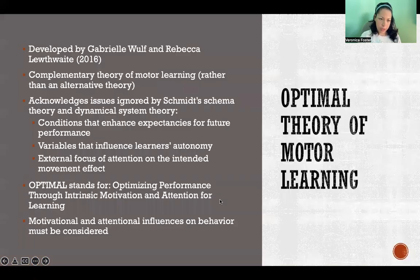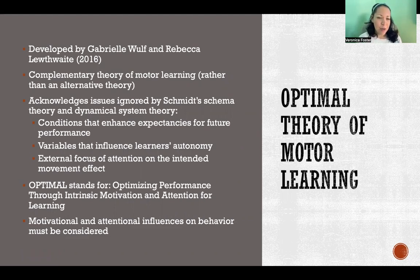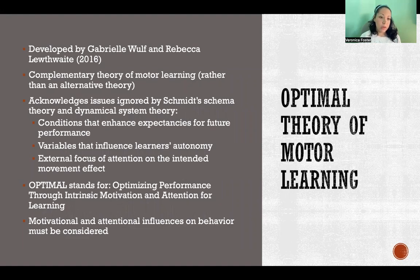In this video, I'm going to talk about the OPTIMAL theory of motor learning. This theory was developed by Gabrielle Wolfe and Rebecca Luthwaite. They developed this theory in 2016, and it's considered a complementary theory rather than an alternative theory to the others we've discussed so far — meaning that it adds to Schmidt's schema theory and dynamical systems theory rather than being in place of them.